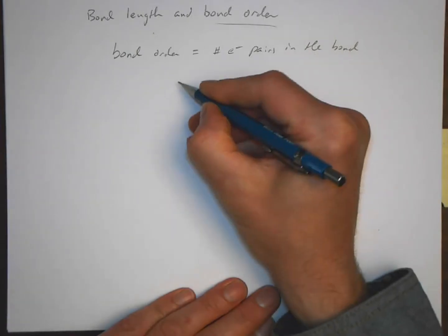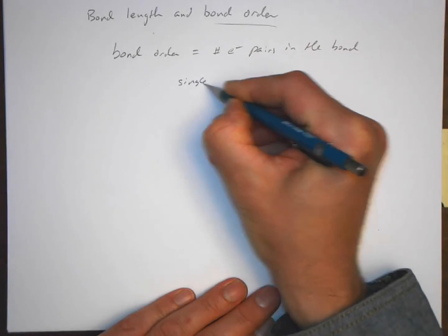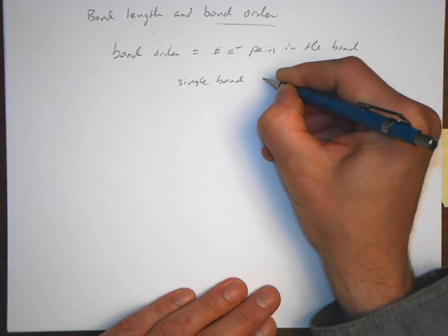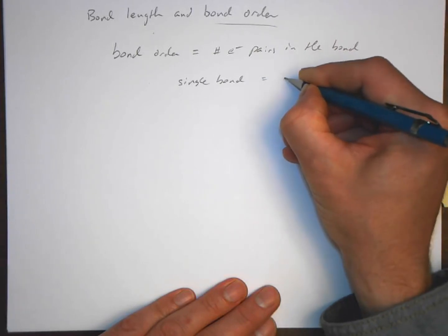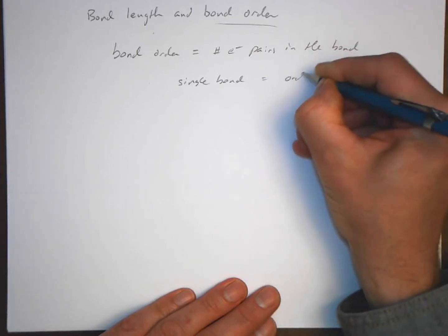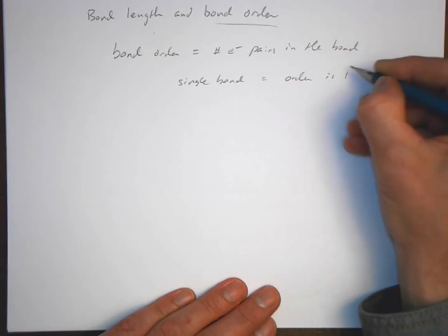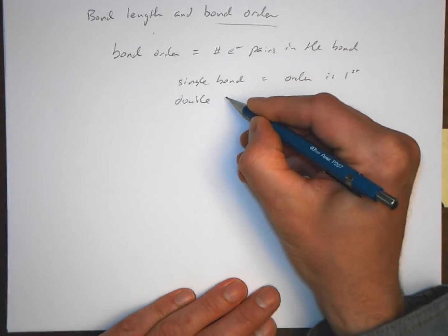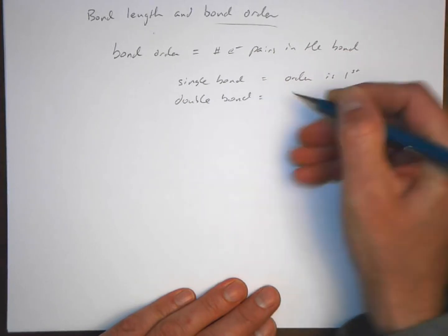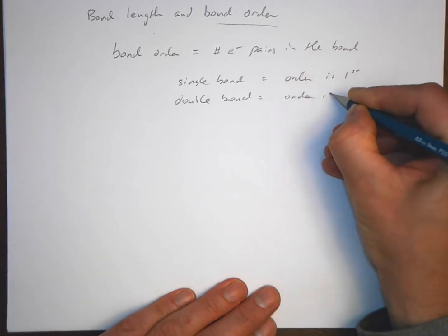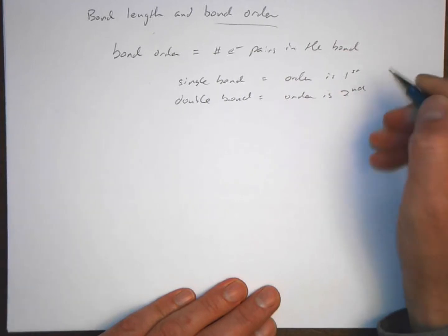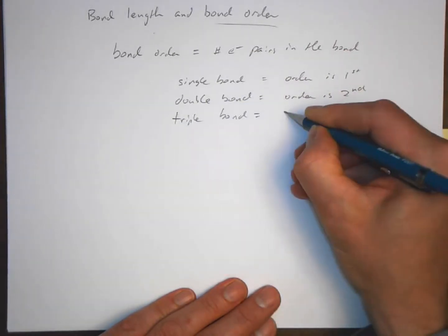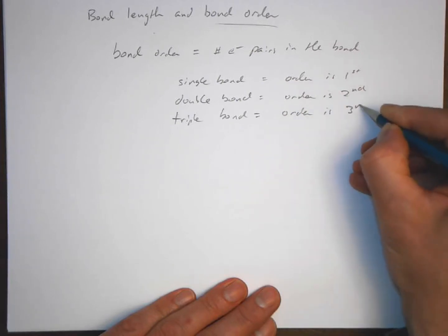Okay, so for example, if we have a single bond, the order would be one, first order. If we have a double bond, the order is second order. If we have a triple bond, the order is third order.